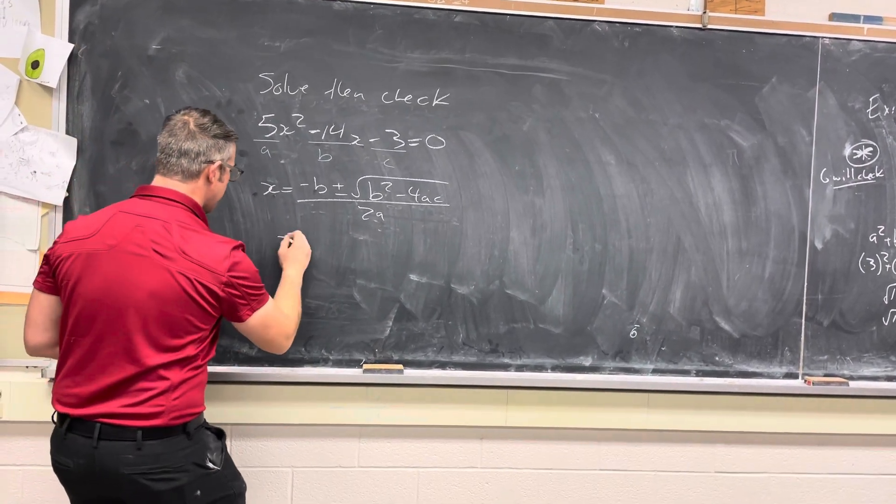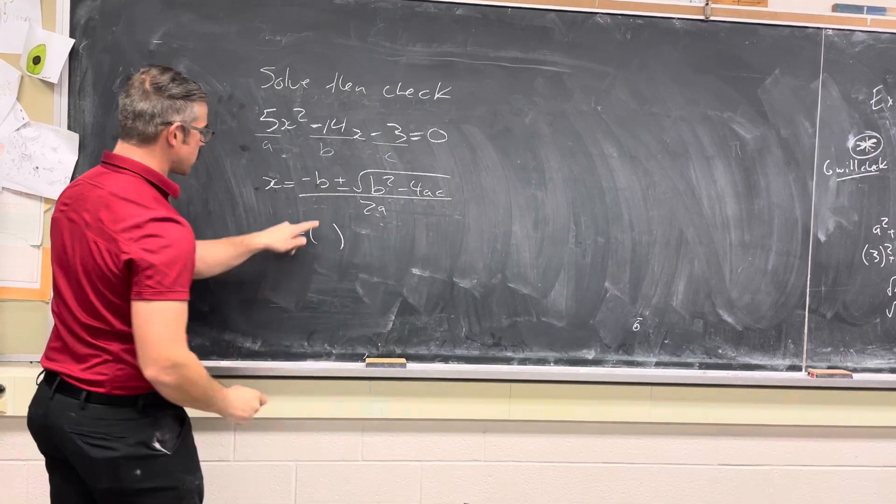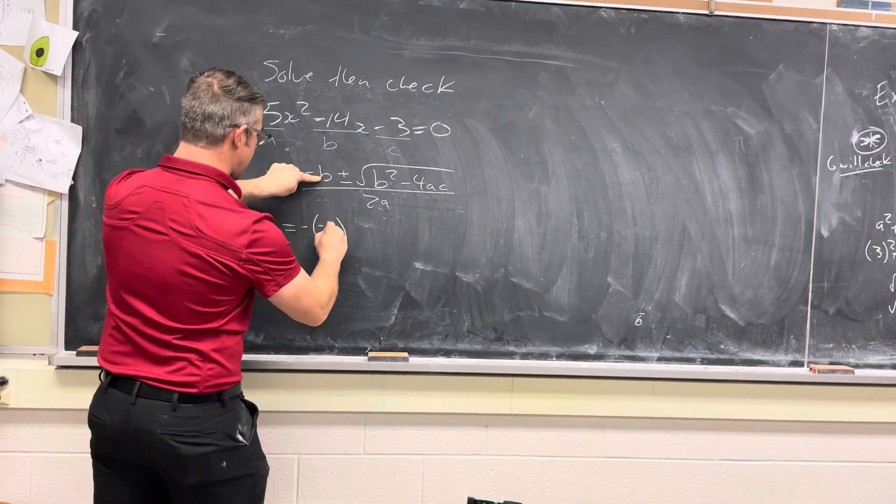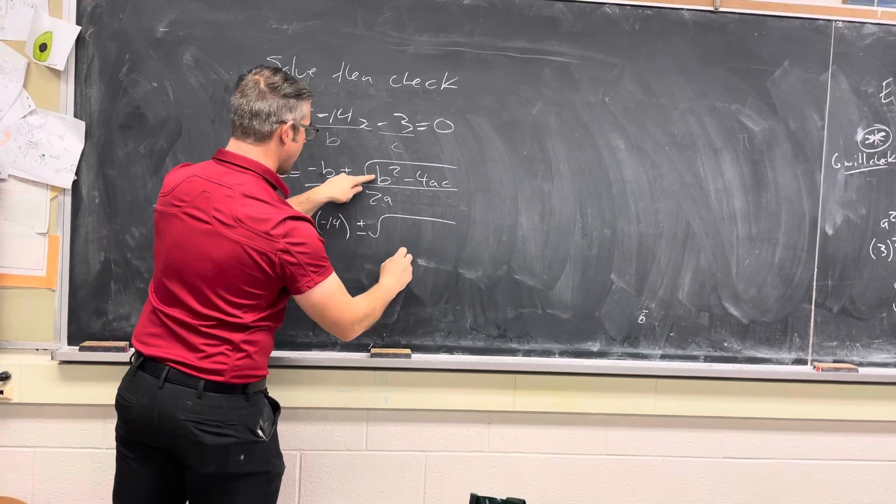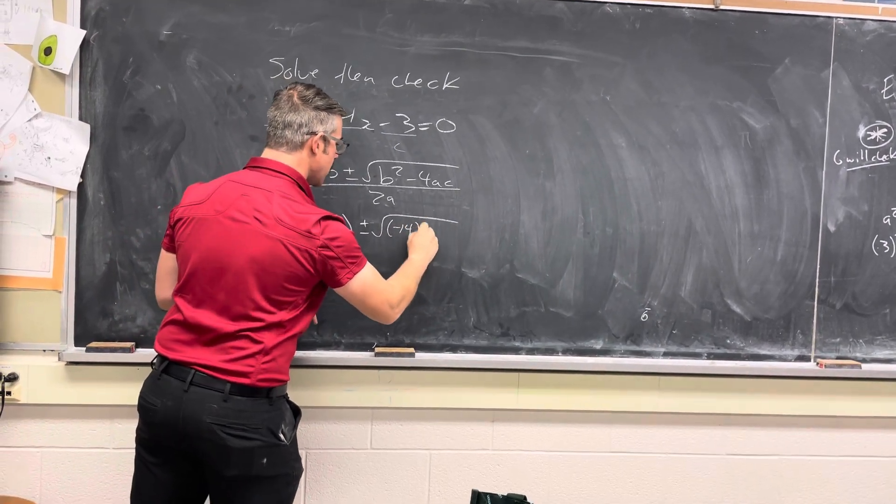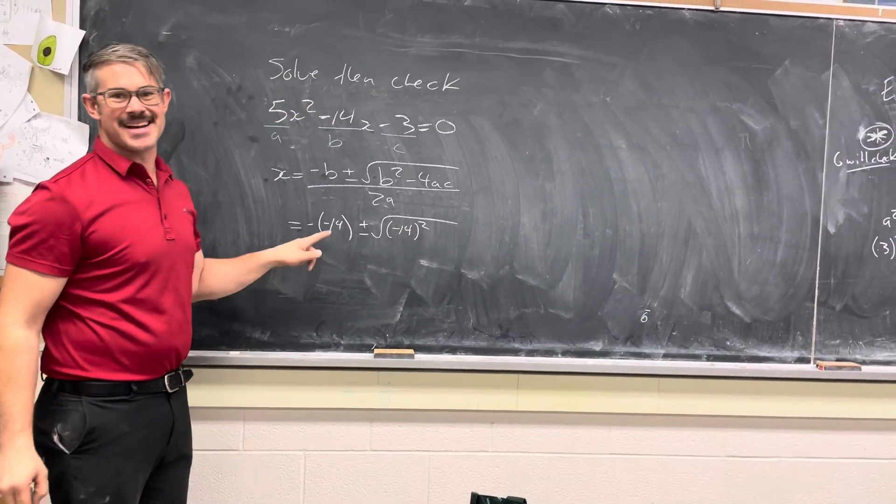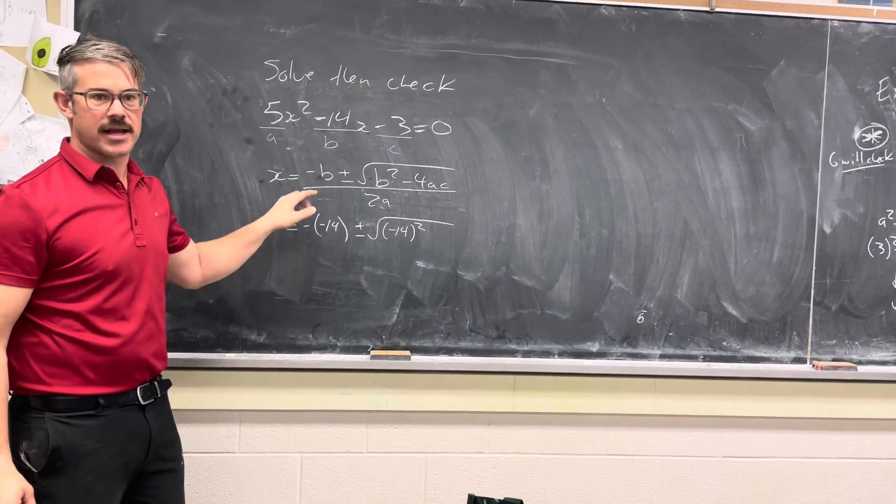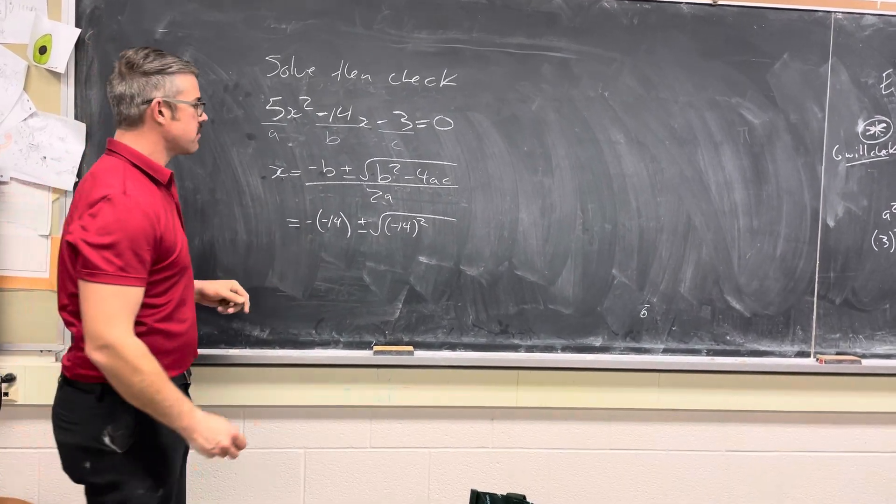So we'll just go ahead and substitute into our values. So where I see this b, I'm going to substitute negative 14. Where I see this b, I'm going to substitute negative 14. You'll notice I'm always substituting my negatives in brackets, so that way I can remember what happens when I have two negatives going together with signs.